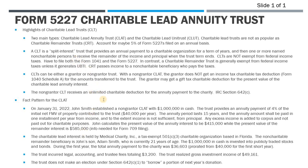I'll start with the slide and then get into the financials and the return itself. Charitable lead trusts have two main types: the lead annuity trust (CLAT) and the charitable lead unit trust (CLUT). They're certainly not as popular as remainder trusts — IRS data shows about 5% of 5227s filed each year are lead trusts. The CLT is a split interest trust where the lead payment goes to a charitable organization for a term of years or the life of an individual, and then one or more named non-charitable persons get the remainder of the principal and income when the trust ends.